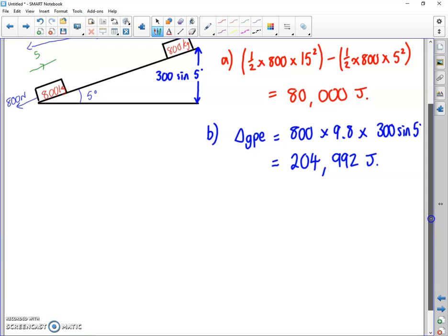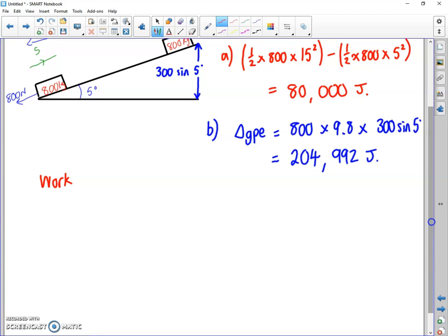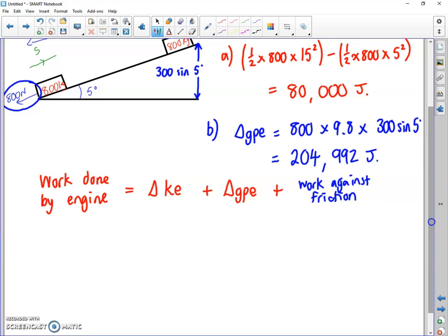Part c says calculate the total work done by the car's engine during this time. Well, the car's engine has produced the gain in kinetic energy, so work done by engine is the increase in kinetic energy plus the increase in GPE, because the engine did that. But it also did one more job which we haven't considered yet, and that is the 800 newtons of resistance that's been acting on the car the entire time. Plus, it's done work against friction - resistance is friction, friction is resistance.